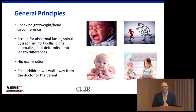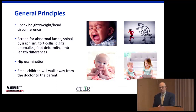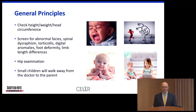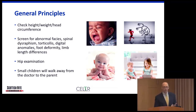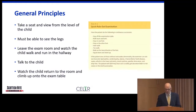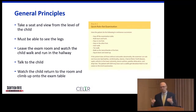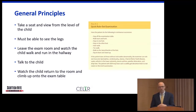A good hip exam is essential — limb length differences can be associated with hip problems, and a hip problem itself can look like a limb length difference. Evaluate small children while they're walking, playing, and behaving in the room from a musculoskeletal standpoint: are they limping, can they sit, stand, walk, crawl, or run? Make sure you can see their legs and upper extremities — everyone goes into shorts and shoes and socks come off.